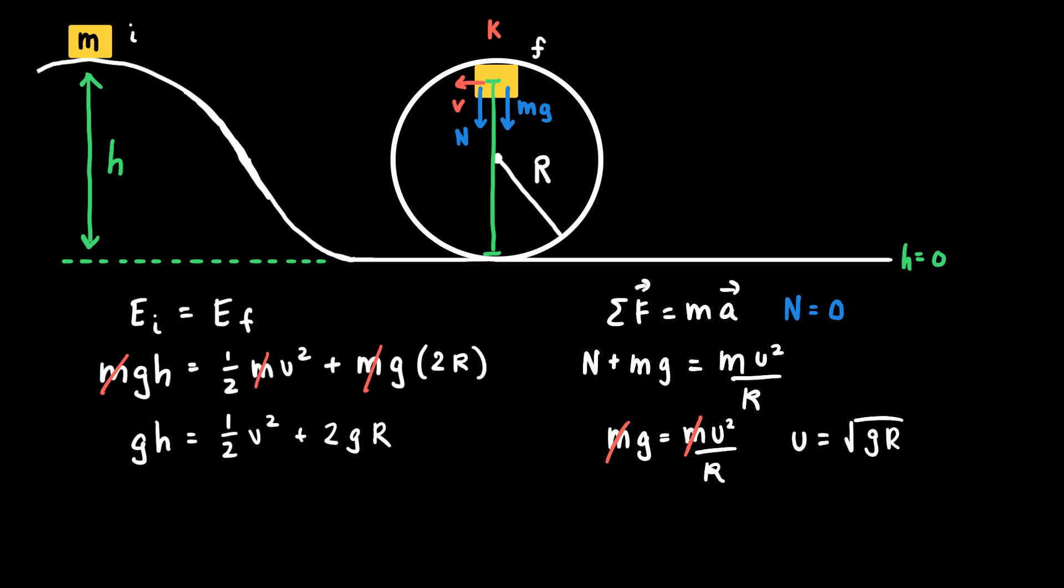And so if I plug this expression back into my conservation of mechanical energy equation, what I get is gh is equal to one-half v squared. Now v is equal to the square root of gr. So v squared would just be equal to gr plus 2gr.